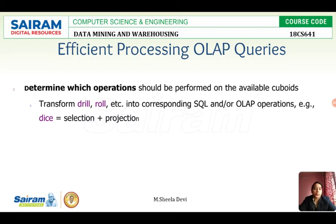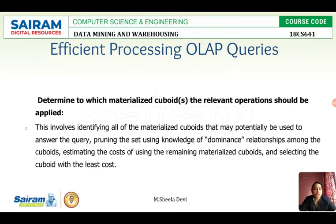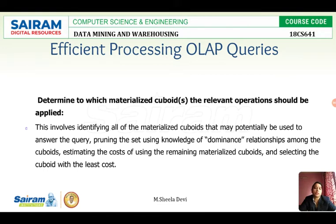The second way to efficiently process OLAP queries is to determine which materialized cuboid should be selected. In partial or full materialization, some cuboids are pre-computed. If the data with respect to the required dimensions is already pre-computed in the data warehouse, we can use that cuboid directly without computing it again, thereby reducing the response time.